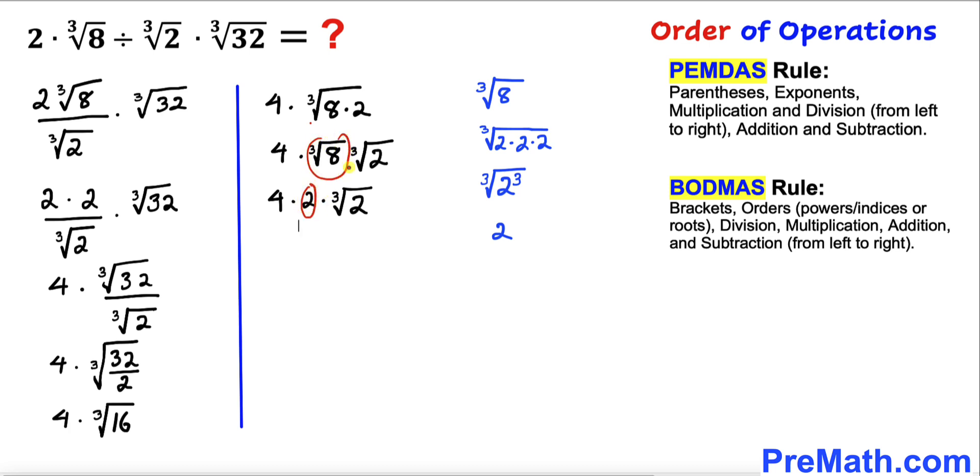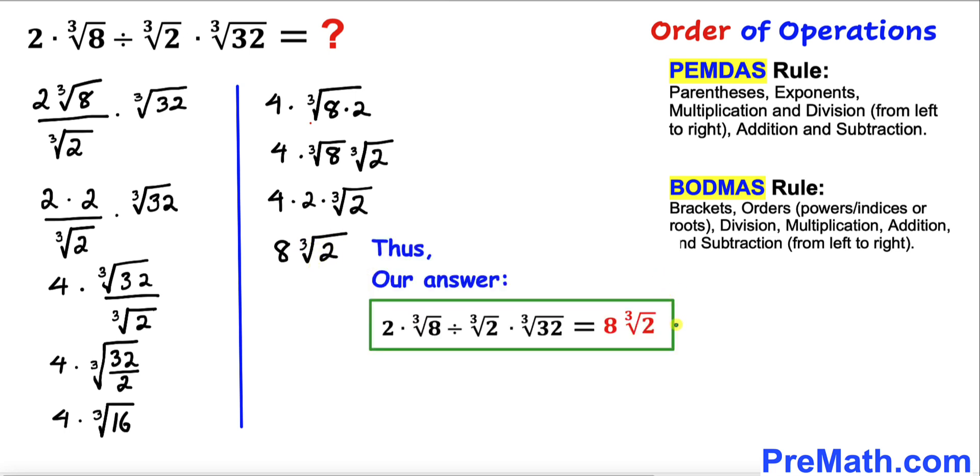And if we multiply these two numbers, 4 times 2 is 8 times the cube root of 2, and that's our answer. Thus our simplified answer turns out to be 8 times the cube root of 2.